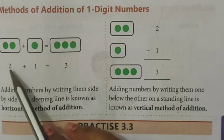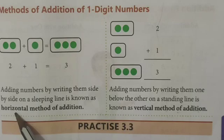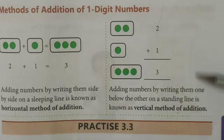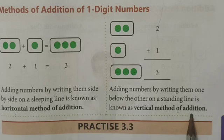In Marathi, the horizontal method of addition is called 'aadi maandni' and the vertical method of addition is called 'ubhi maandni'.